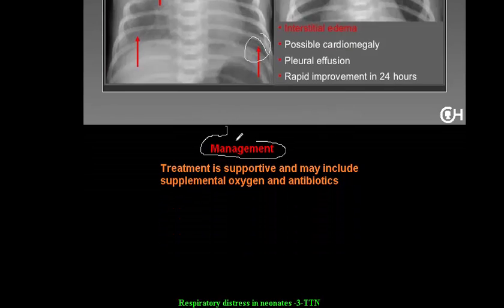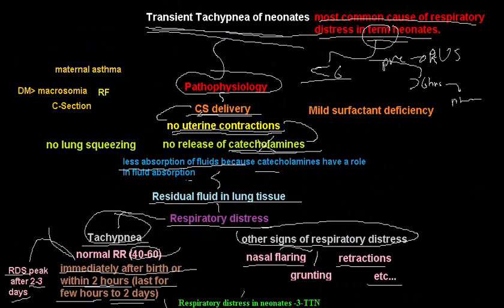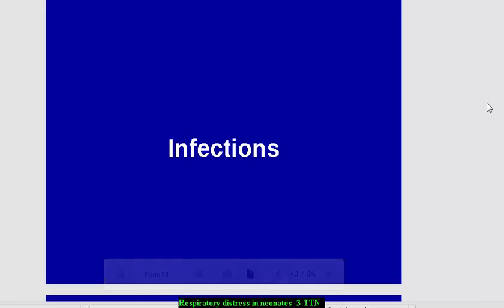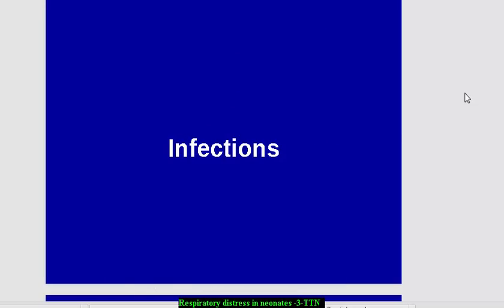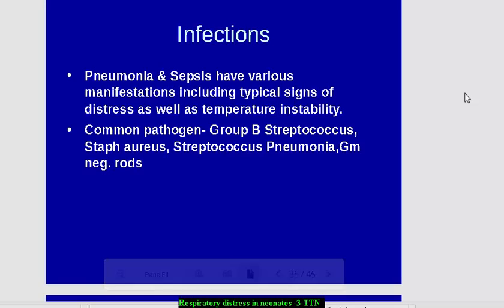Management — treatment is only supportive. It will resolve after two days, and may resolve after just a few hours. Supplementation of oxygen and antibiotics is sometimes necessary. This is all about transient tachypnea of the neonate. Now I'm going to talk briefly about infections like pneumonia, which are important causes of respiratory distress in neonates.